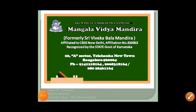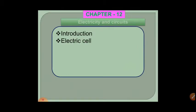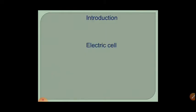Namaste children, this is your science faculty from Mangala Vidya Mandira. Today we are going to learn a new chapter — Chapter 12: Electricity and Circuit. In this chapter we will learn about electric cell, electric bulb, electric circuit, electric switches, conductors and insulators. We will go through these topics one by one.